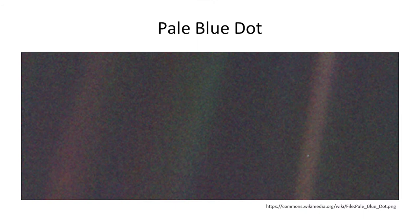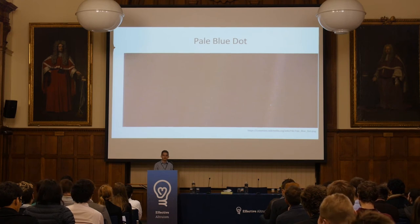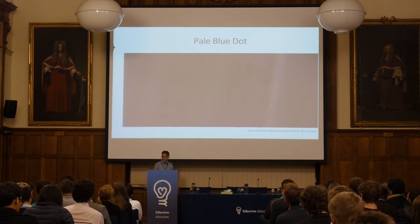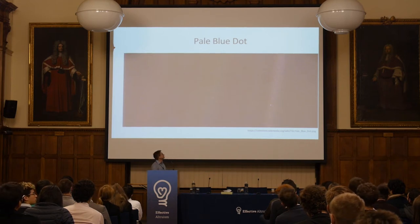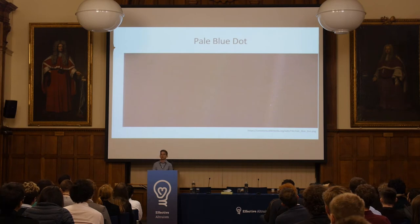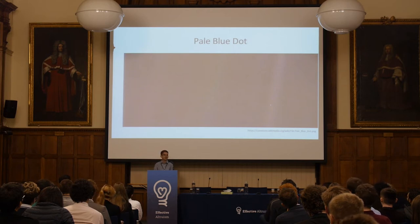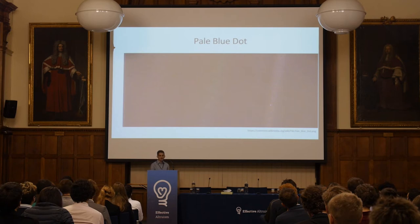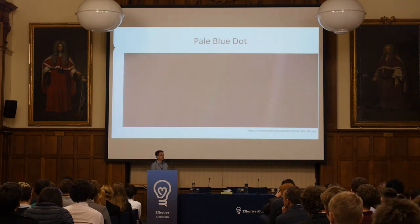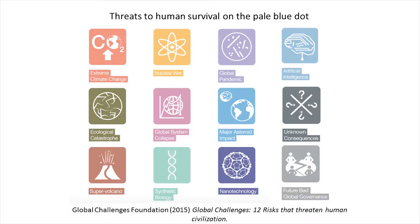Let's start with traditional methods of thinking about global catastrophic risks and existential risks — I'll just say GCRs for short. We have this image of the pale blue dot. This is Earth, taken by the Voyager probe. It's tiny and fragile, and it's where all sentient life is currently at. This gets us thinking about what could make all of that life, sentience, and vitality go away.